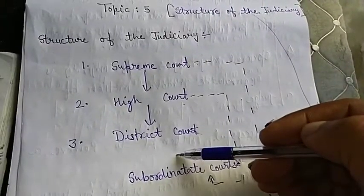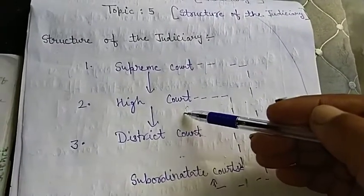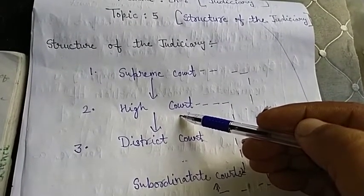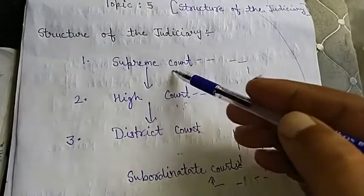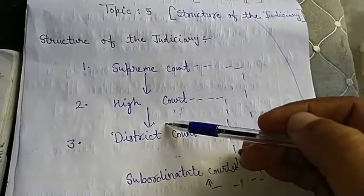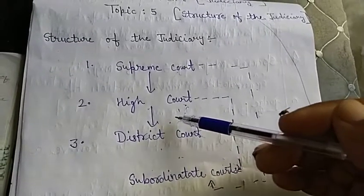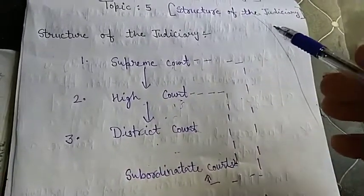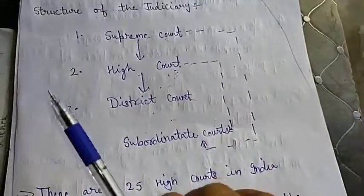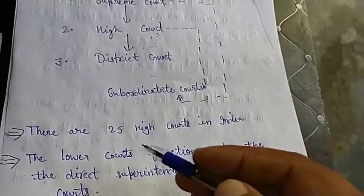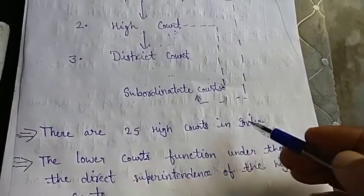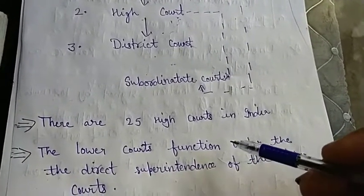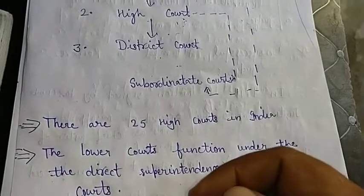All the lower courts work under the superintendents of higher courts. High Courts work under the superintendents of Supreme Court. District Courts work under the superintendents of High Courts. There are about 25 High Courts in India.